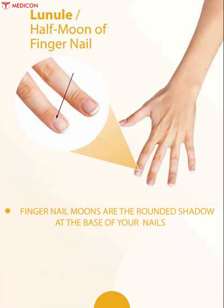Lunula: fingernail moons are the rounded shadows at the base of your nails. The place where each nail begins growing is known as the matrix. The lunula is a part of the matrix.